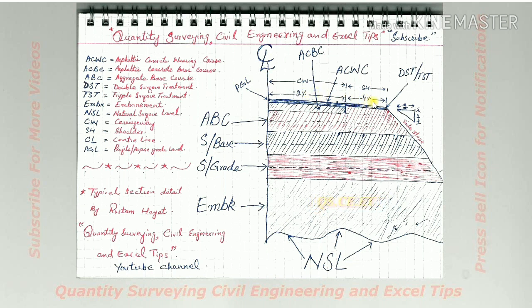DST is double surface treatment and TST is triple surface treatment on shoulders. This is the side slope 2:1—it means two horizontal, one vertical. Where it meets with NSL, it's called the toe point.